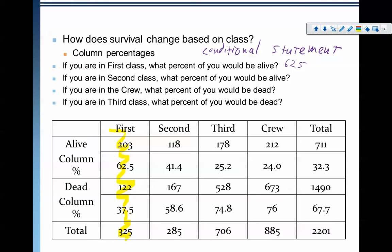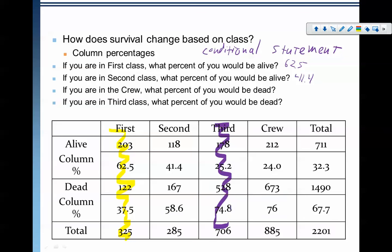The second class — if you were in second class, what percent would be alive? That's 41.4%. Looking at this, the second class maybe didn't have it as good as we thought before, because a significantly higher percentage of dead people were in second class than alive. Now if we look at the third class and crew, we can see even more so how these groups got hit hard in terms of being alive or dead. The third class — if you were in third class, what percent would be dead? 74.8% would be dead. That's a huge amount. And the crew was just as bad — 76% of them would be dead.